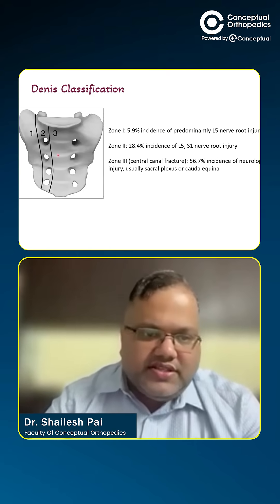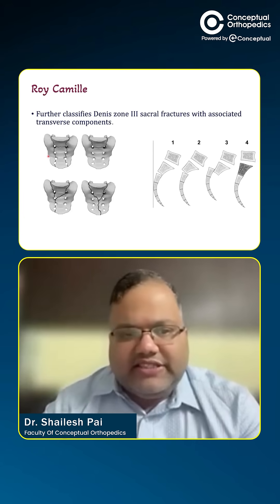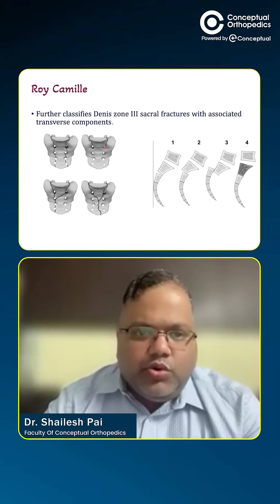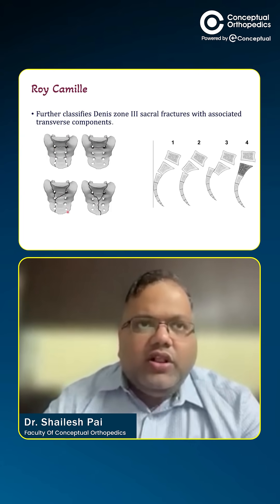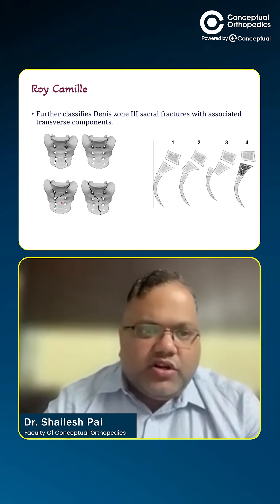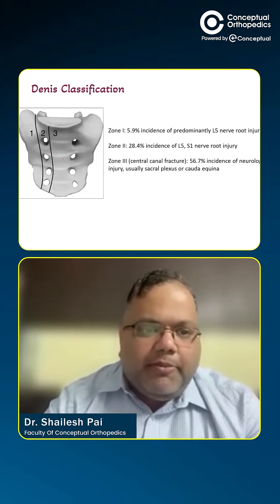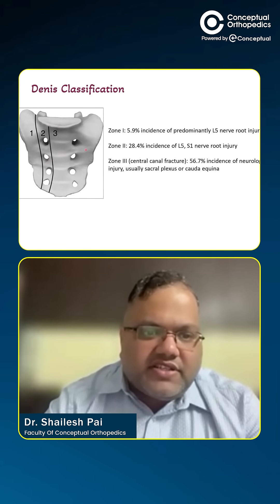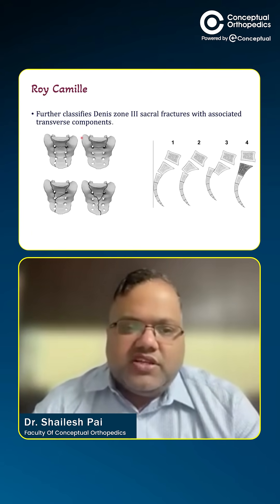Now, in zone 3 injuries or for other injuries there are further modifications. One is regarding how the fracture pattern is. The fracture pattern can be U type, H type, Y type, lambda, or even a D. These are for fractures that are not purely vertical. In many sacral fractures, the fracture line can have multiple orientations — a vertical line along with a transverse line, or a vertical line with an oblique line going to the opposite side. This adds to the instability, hence this morphological classification.